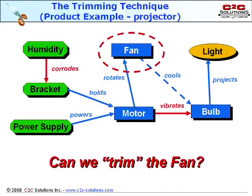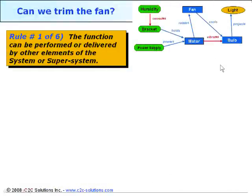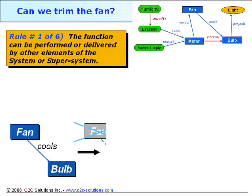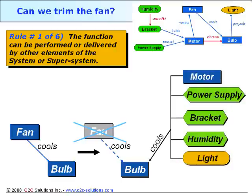Can we trim the fan? Let's look at the six trimming rules. The first of six rules has the problem solver figure out how to get other parts of the system or super system to pick up the slack of the trimmed component. So the fan cools the bulb. If the fan is trimmed, we must now figure out how any of the other components can cool the bulb.